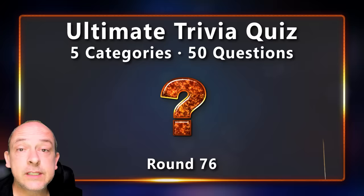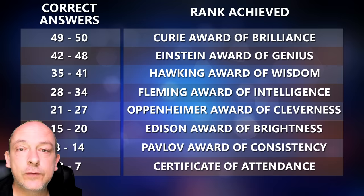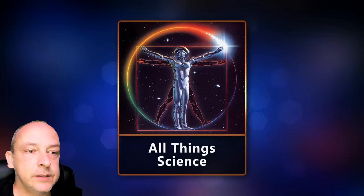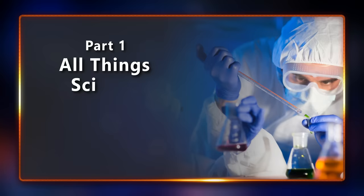Hello trivia friends, welcome back to Ditormentes. My name is Sean. This is round 76 of the ultimate trivia quiz — 50 questions as always, quite a challenging quiz today. Keep track of how many questions you can answer correctly and check the end of the video to see which rank you managed to get. The topics for today's quiz are all things science, language, mixed trivia questions, creatures great and small, and cities and countries. Let's start the quiz.